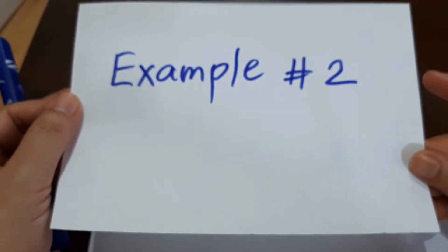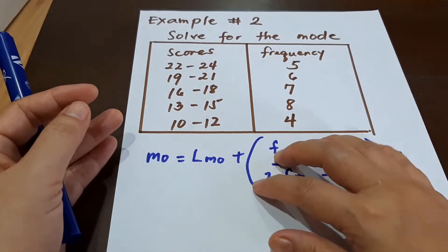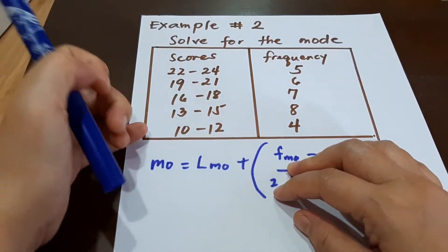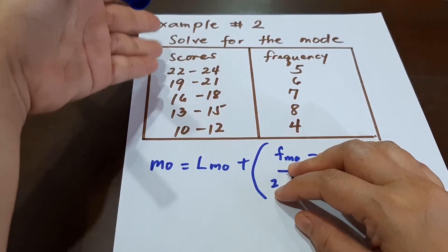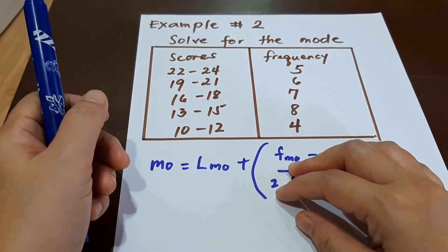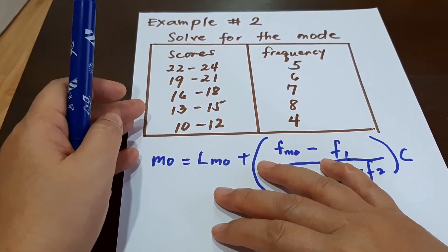Let's have example number two. On our first example, we dealt with scores from lowest to highest, but this time we'll begin from highest to lowest, so this is in descending order. How to solve for the mode with scores like this?